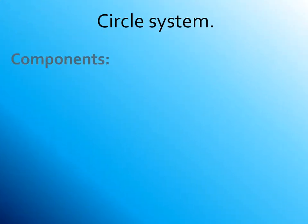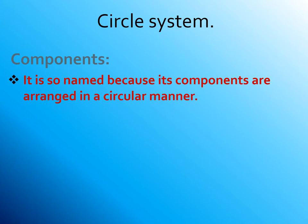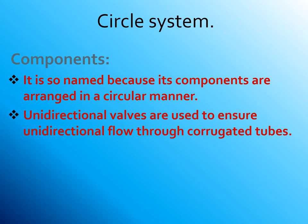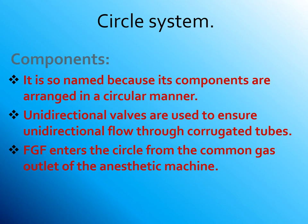Now we are going to talk about the circle system. It is so named because its components are arranged in a circular manner. Unidirectional valves are used to ensure unidirectional flow through corrugated tubes. Fresh gas flow enters the circuit from the common gas outlet of the anesthetic machine.